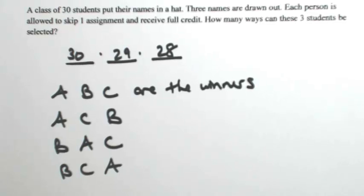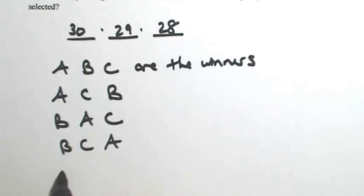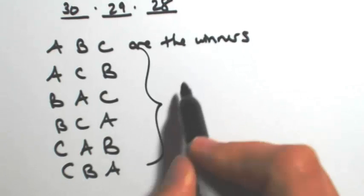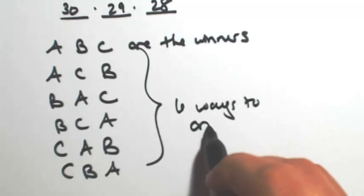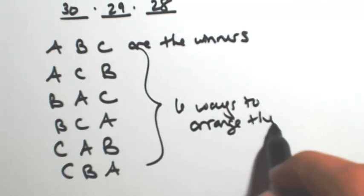It doesn't matter in which order they were drawn. They're all still getting the same thing. If I put C first, then we have C, A, B, and C, B, A. All together there's six ways to arrange the winners.